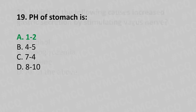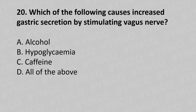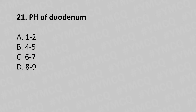Now let's move to question number 20. Which of the following causes increased gastric secretion by stimulating the vagus nerve? Option A: Alcohol. Option B: Hypoglycemia. Option C: Caffeine. Option D: All of the above. And the answer is Option B: Hypoglycemia.